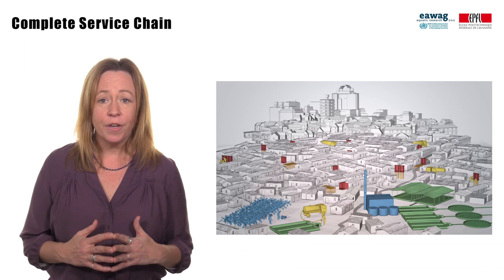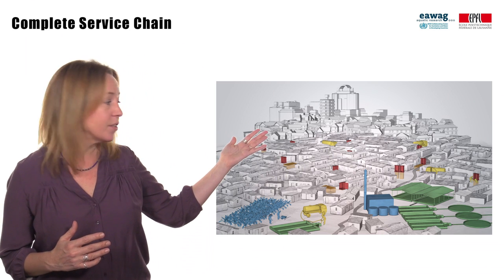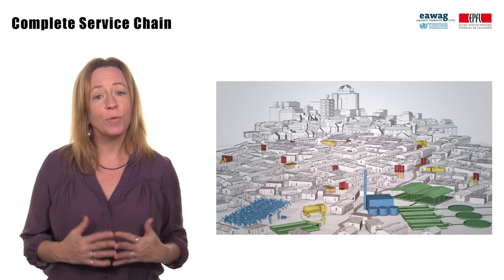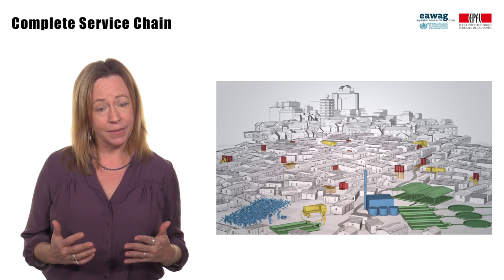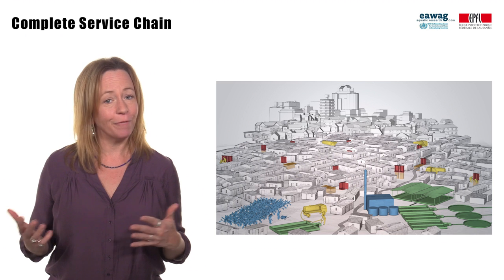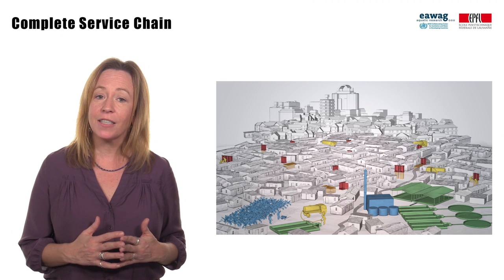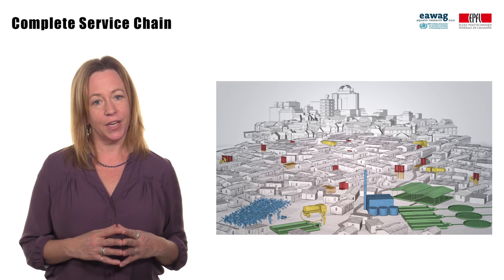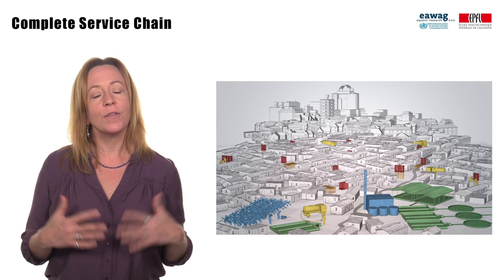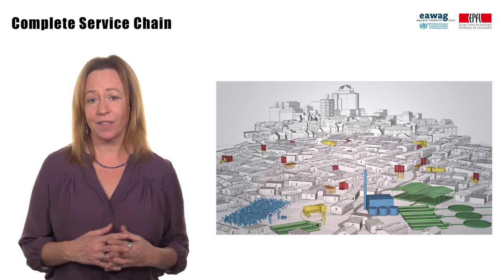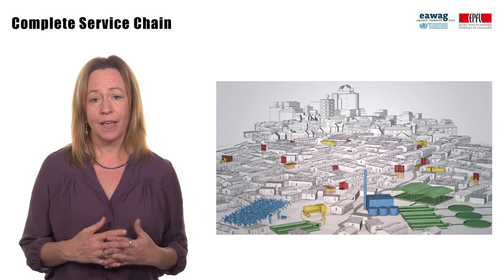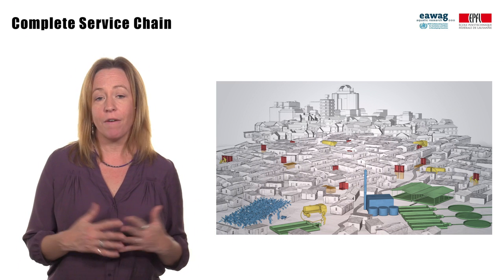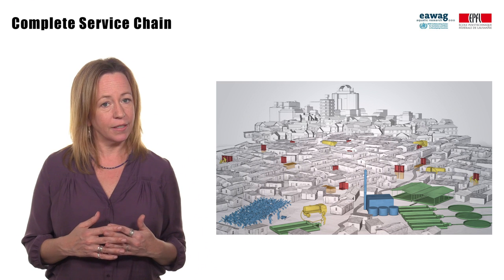You also learned about how a complete sanitation service chain for fecal sludge management is different than for sewer-based systems. In contrast to 'Flush and Forget,' it is about interactions between people at every step in the chain. Along with this, you also learned about weak links in the service chain, and saw multiple examples with pictures and a video of the FAME and UACT research projects.